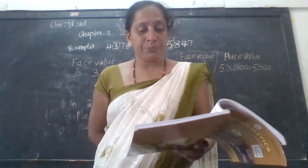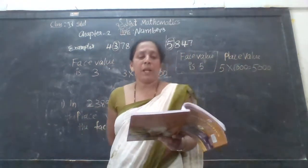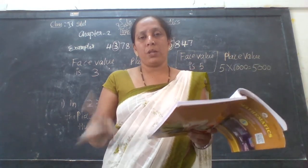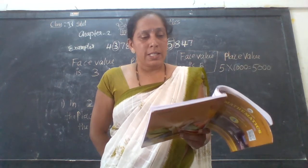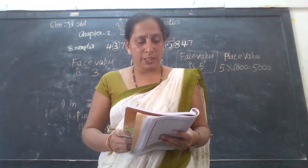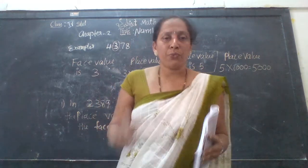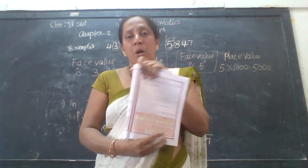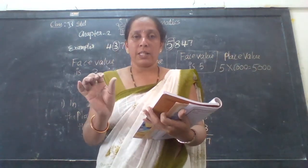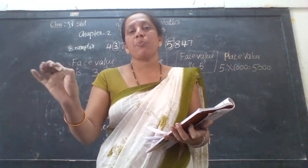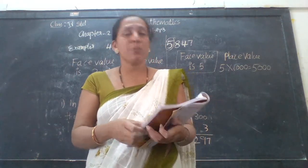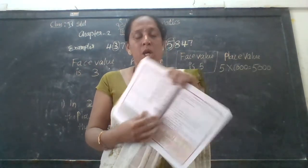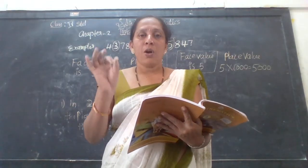Observe the following examples. They have given both face value and place value. How to find the place value? See, here is the number 4073. Look at the digit 4. In which position is the number 4? It is in the thousands place. So the place value of 4 is 4,000.